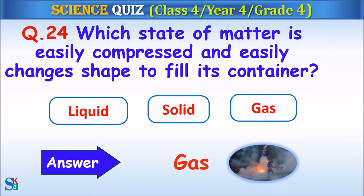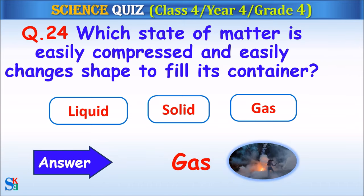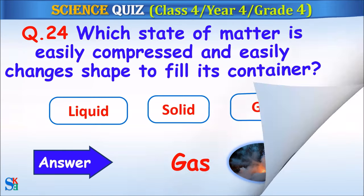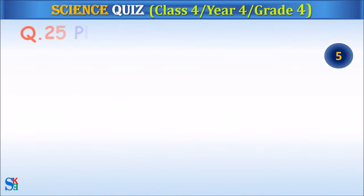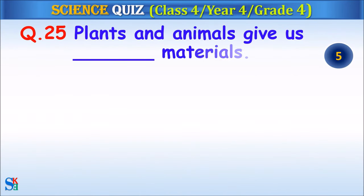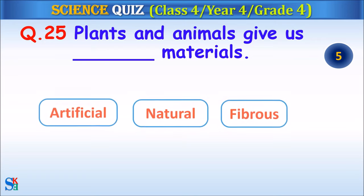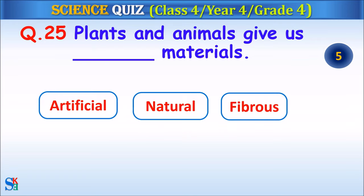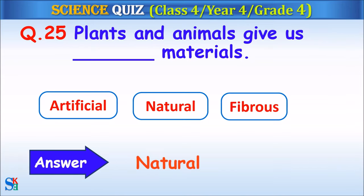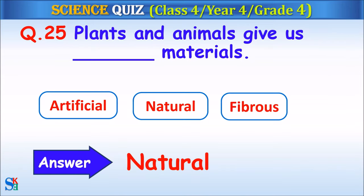The answer is gas. Question 25: Plants and animals give us artificial materials, natural materials or fibrous materials? Your time starts. The answer is natural materials.